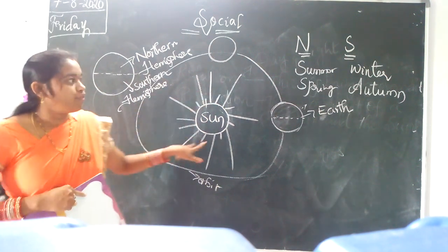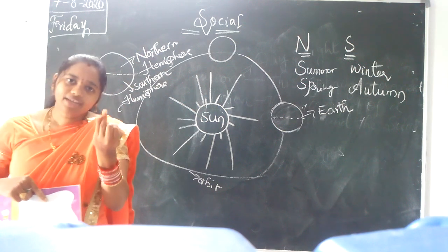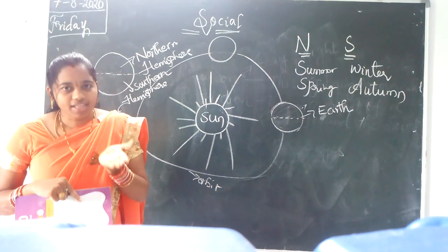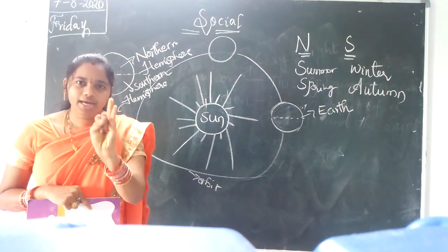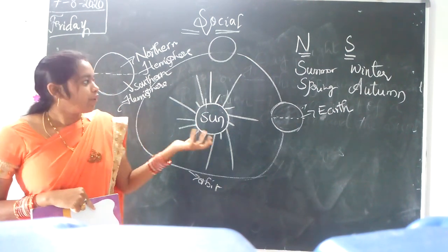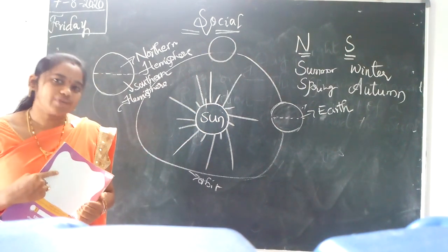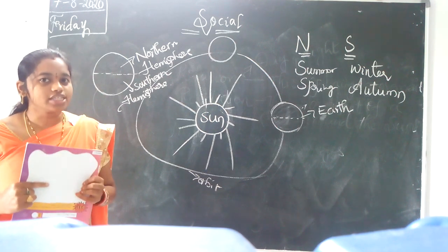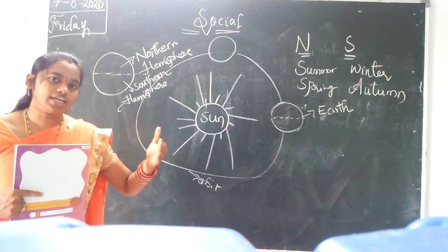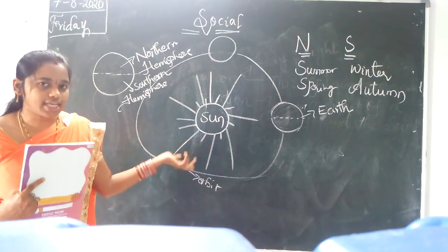The four seasonal changes are: spring, summer, autumn, and winter. Autumn is the season which comes before winter. These are the four main seasonal changes. Which movement causes seasonal changes? Revolution. Which movement causes the formation of day and night? Rotation. So rotation causes formation of day and night, and revolution causes formation of seasonal changes.